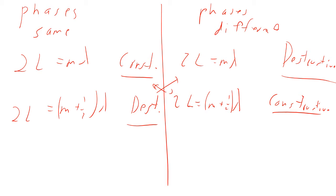You need to keep track of whether you get a phase shift upon reflection. If both reflections have a phase shift, the phases are the same and the first set of equations holds. If one reflection has a phase shift and the other does not, the phases are different and you use the second set of equations. They're the same equations, just opposite — you just have to keep track of which situation you've got.